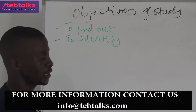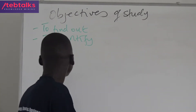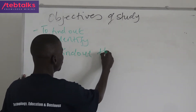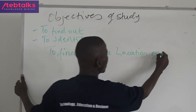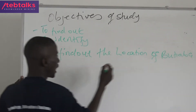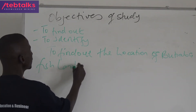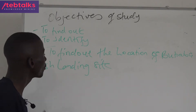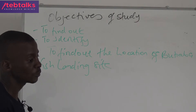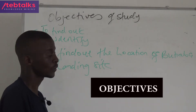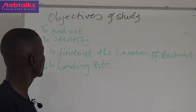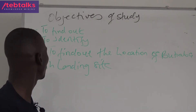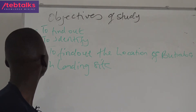So how do we write our objectives? The first objective is usually to find out the location of the Java fishing landing site. That is our first objective. We cannot have objectives without knowing where we are going. So the first thing is to find out the location — that is the first objective.